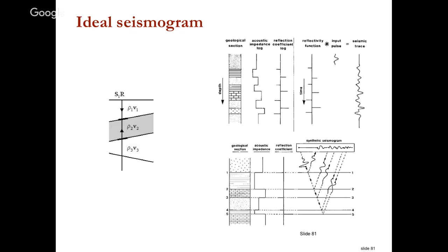We call this the reflectivity function — the reflection coefficients now as a function of time rather than depth. The polarities match, but the timing differs from the depth version because not all layer velocities are the same, so time gets compressed or stretched. So we go from: geologic log → acoustic impedance → reflection coefficients in depth → reflectivity function in time.